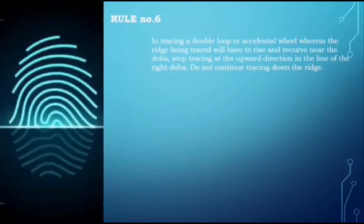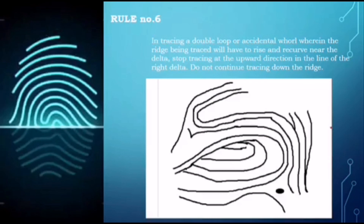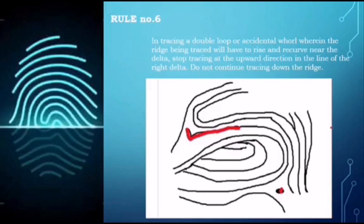Rule number six: in tracing a double loop or accidental whorl where the ridge being traced will rise and recurve near the delta, stop tracing at the upward direction in line with the right delta — do not continue tracing down the ridge. Starting the tracing and going upward, we stop at the point in line with the right delta.